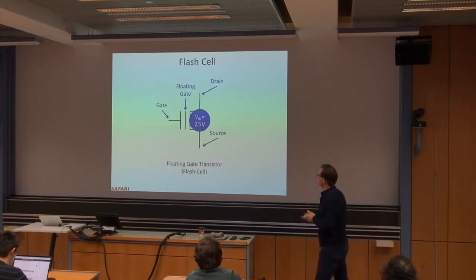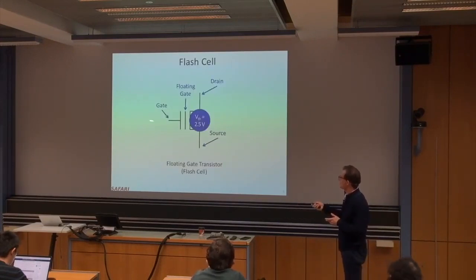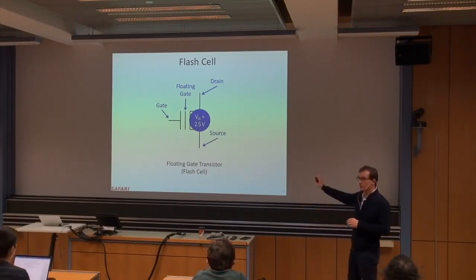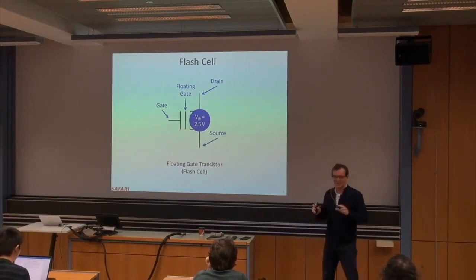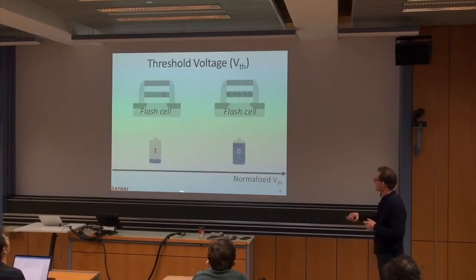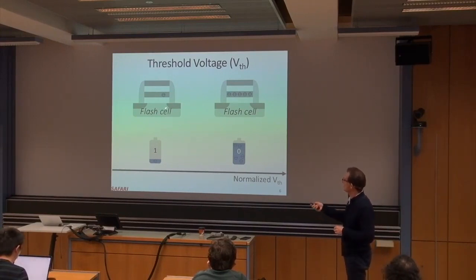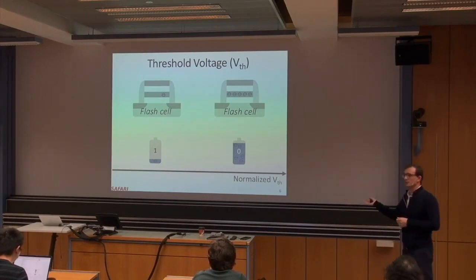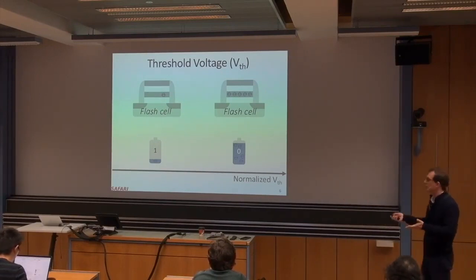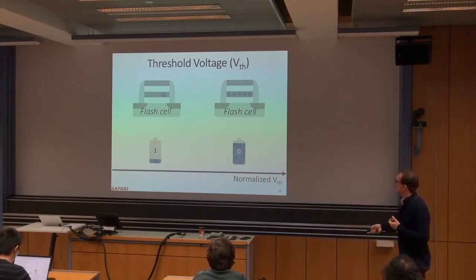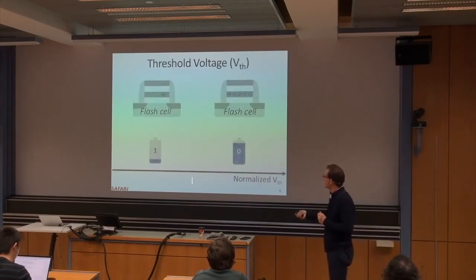Let's assume the threshold voltage is 2.5 volts after programming. When you apply some reference voltage, the cell reacts depending on what voltage it's programmed to. It can store that voltage essentially forever — it's non-volatile — at least theoretically. In practice, there are many other effects. On a normalized threshold voltage axis, a cell with very few electrons (low voltage) can be encoded as a '1', and a cell with many electrons (high voltage) can be encoded as a '0', with a boundary between these two states.